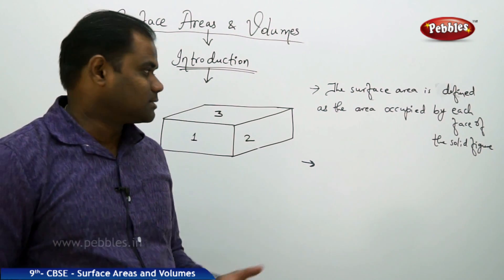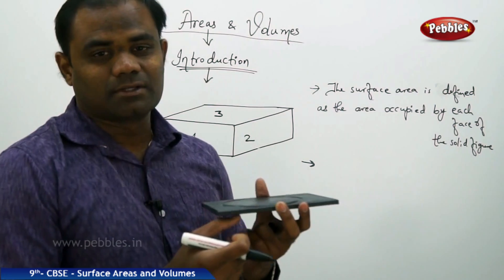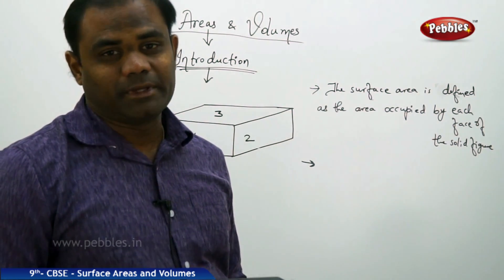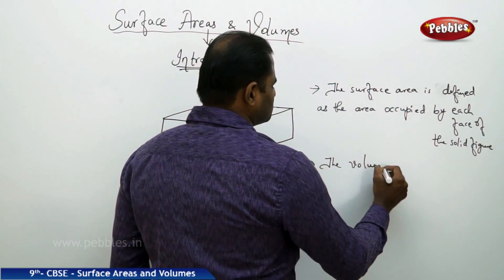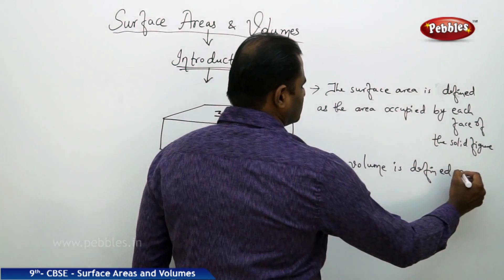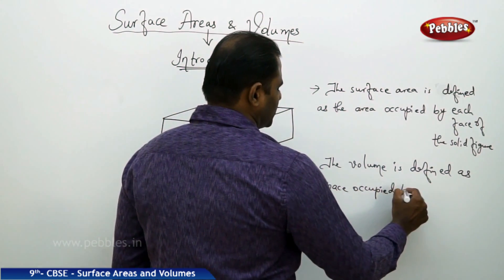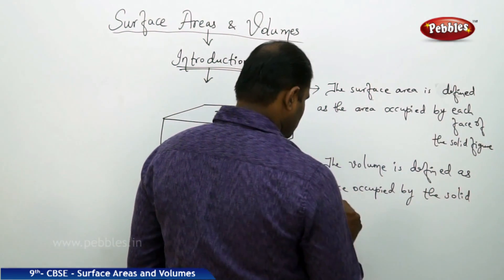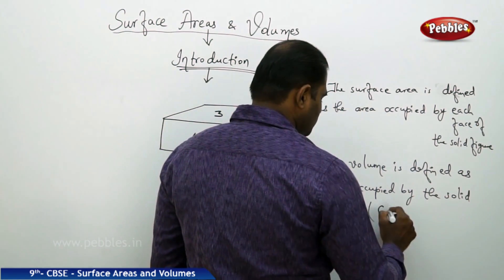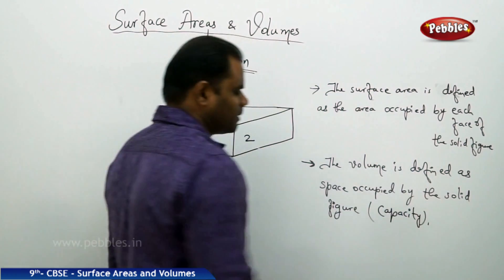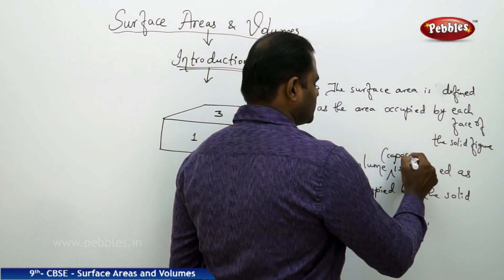It is the capacity. Let's define volume in terms of the capacity of this box — how much space it occupies. Hence its volume is what it occupies in space. The volume is defined as the space occupied by the solid figure. Sometimes we also call the volume the capacity.